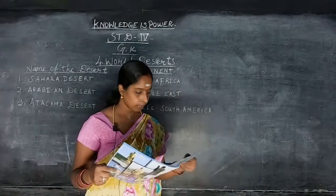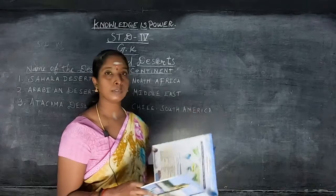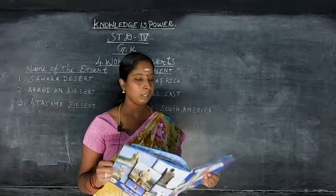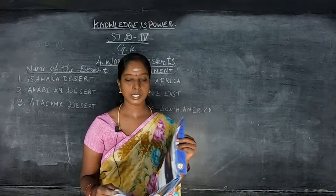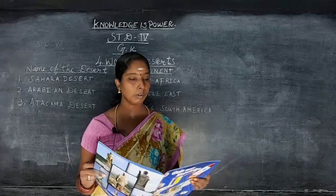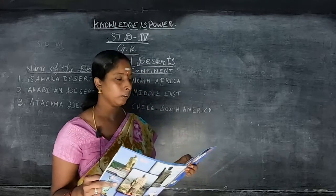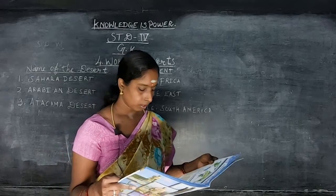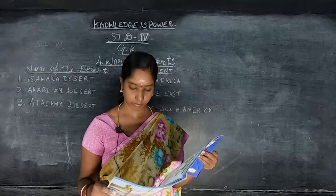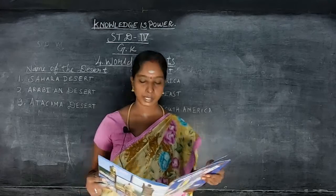Okay students, this lesson is finished. Number one: Solar Family. Number two: The Earth. Number three: World Rivers. Number four: World Deserts. You will learn all lessons. Next class I will cover page number nine. Thank you, students.